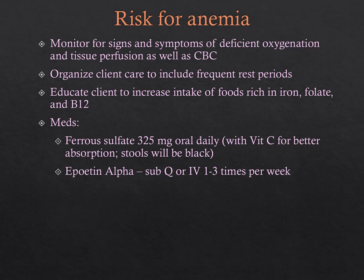Risk for anemia: monitor for signs and symptoms of deficient oxygenation and tissue perfusion. Ferrous sulfate (iron) can be given — administer it with vitamin C for better absorption and educate clients that their stools will be black. Epoetin alfa can be given to stimulate red blood cell production; monitor blood pressure frequently and check hemoglobin, hematocrit, and iron levels.